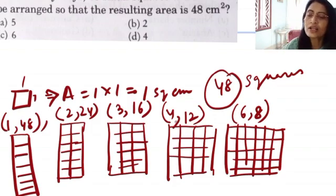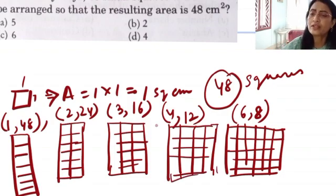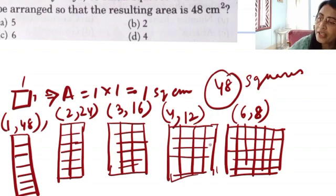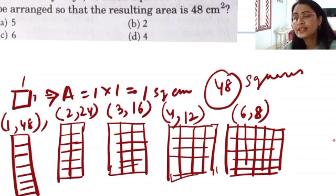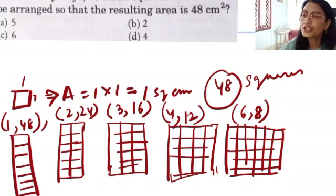We continue: 12 columns give 4 rows, 16 columns give 3 rows, 24 columns give 2 rows, and 48 columns give 1 row. We need to find those factor pairs where rows × columns = 48 square centimetres exactly. So how many options do we have? 1, 2, 3, 4, 5. That means 5 is the answer.